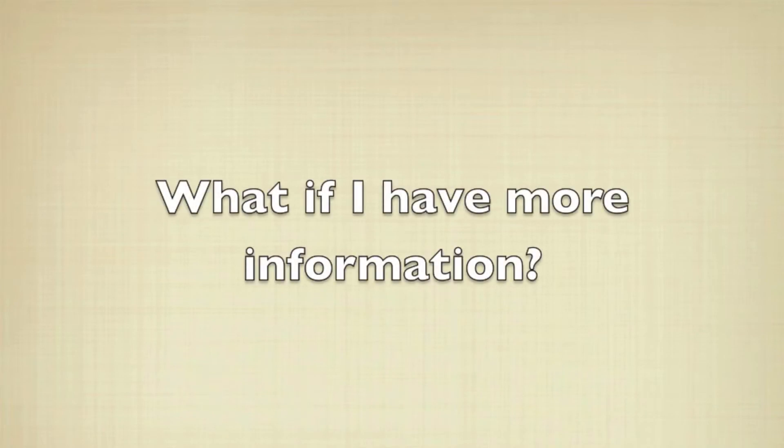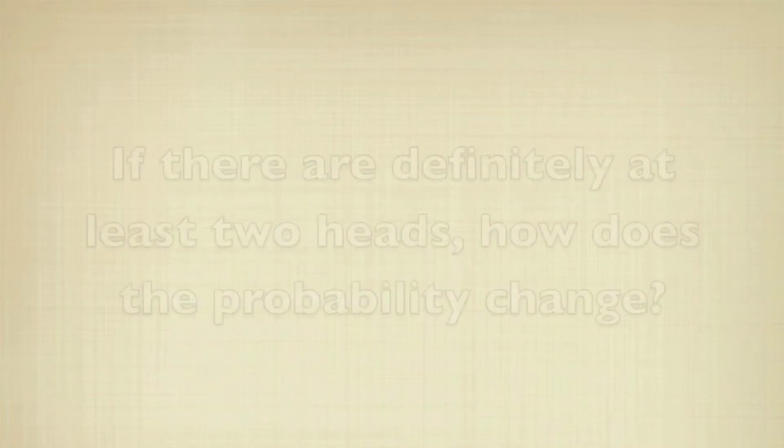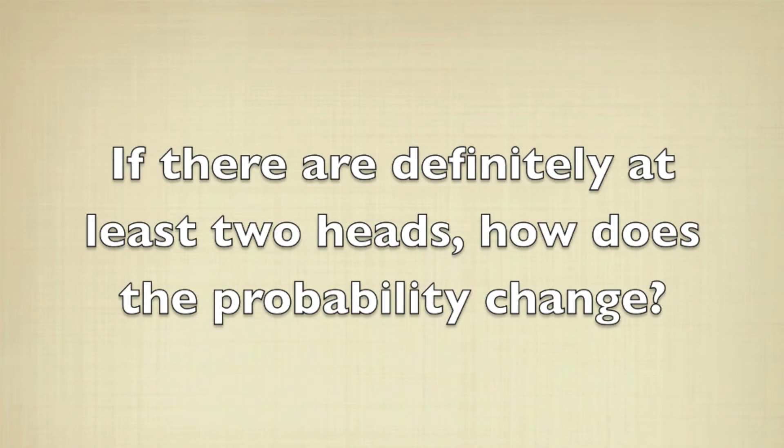Now what if I have some more information? If I know that two of the tosses, at least, come up to heads, how does the probability change?